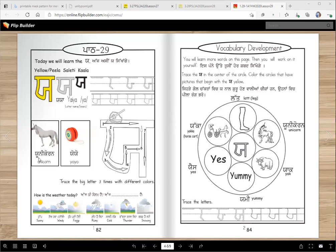So we learned two, right? Unicorn and yo-yo. Now let's see - trace the yaya in the center of the circle. So, one, two, three, four, five, six. Okay, circle the circles that have pictures that begin with yaya. Color the circle. So let's read all the names first. This is lat - does it begin with yaya? Nope. Unicorn? Yes, you will color this yellow.